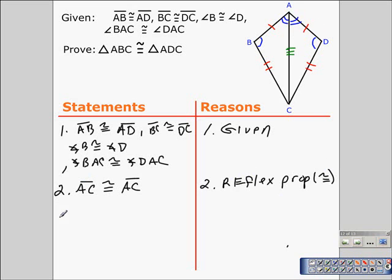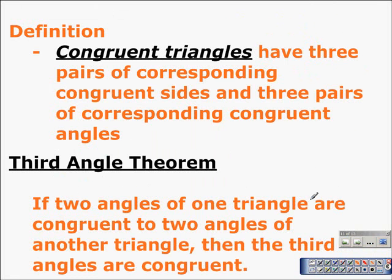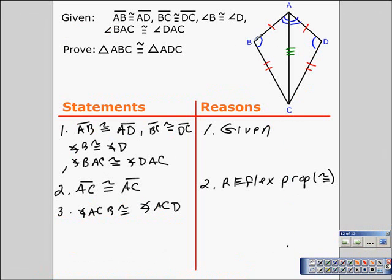The next thing we need to establish is that the third angle in each triangle — angle ACB — is congruent to angle ACD. We just saw the third angle theorem: if two angles of one triangle are congruent to two angles of another triangle, then the third angles are congruent. That's exactly what we have: we were given that angle B is congruent to angle D, and angle BAC is congruent to angle DAC. Therefore, the third angles are congruent. So we mark angle ACB congruent to angle ACD, justified by the third angle theorem.